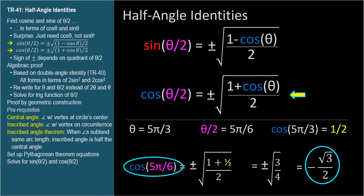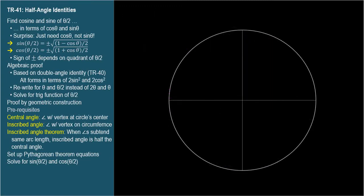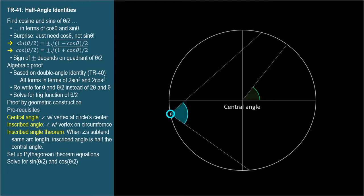Now let's prove it graphically. We'll need to use the inscribed angle theorem — which you may have encountered in your geometry course. A central angle has its vertex at the center of the circle, while an inscribed angle has its vertex on the circumference of the circle.